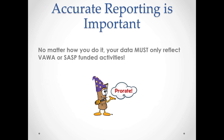Accurate reporting on the use of funds is really important — it's the number one issue we encounter when reviewing reports, and the number one issue we get back when Muskie sends us a red flag report requiring correction by subgrantees. No matter how you do it, your data must only reflect VAWA or SAS-funded activities. You must prorate.